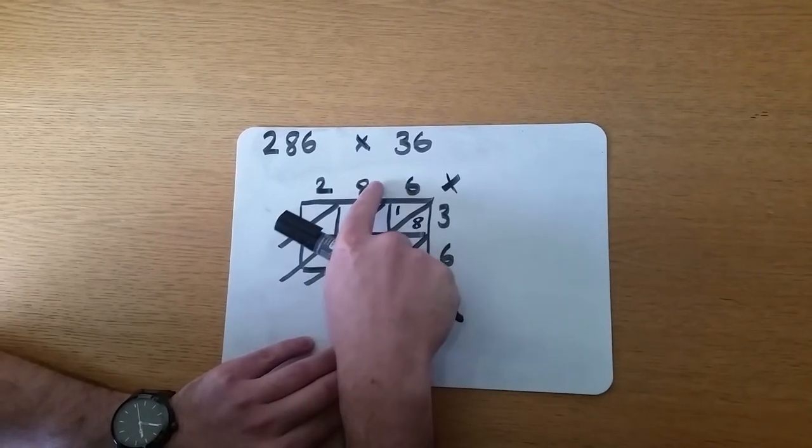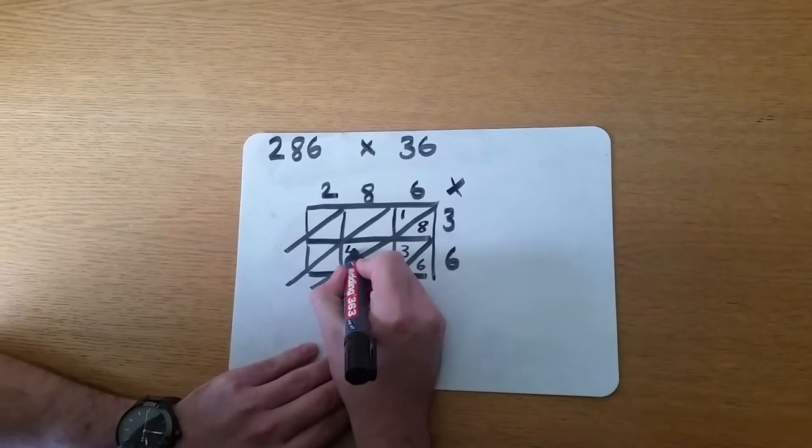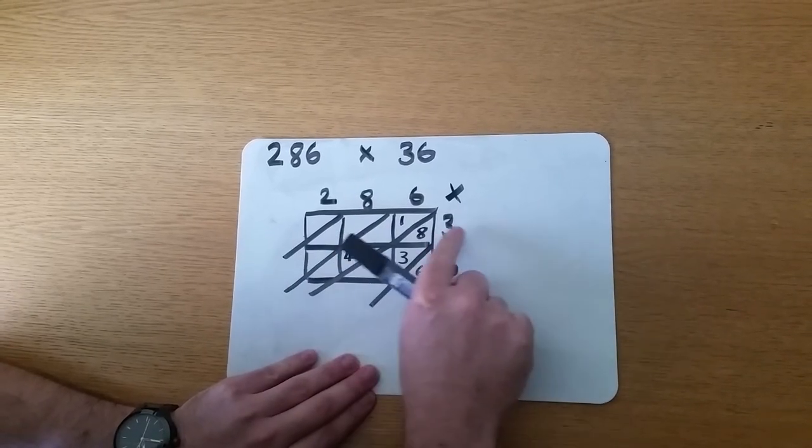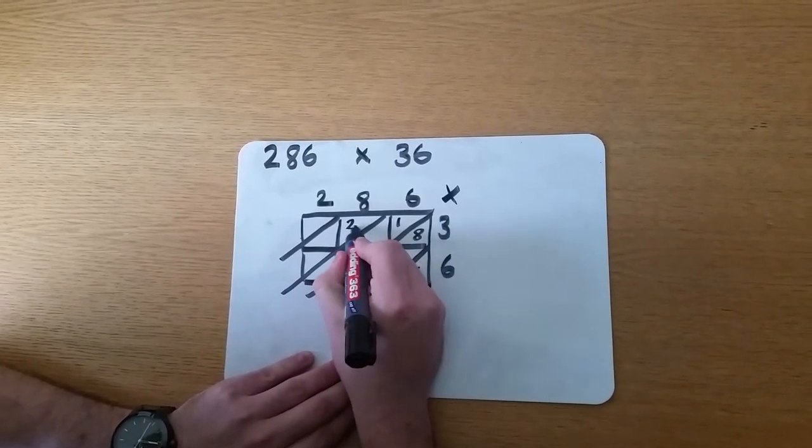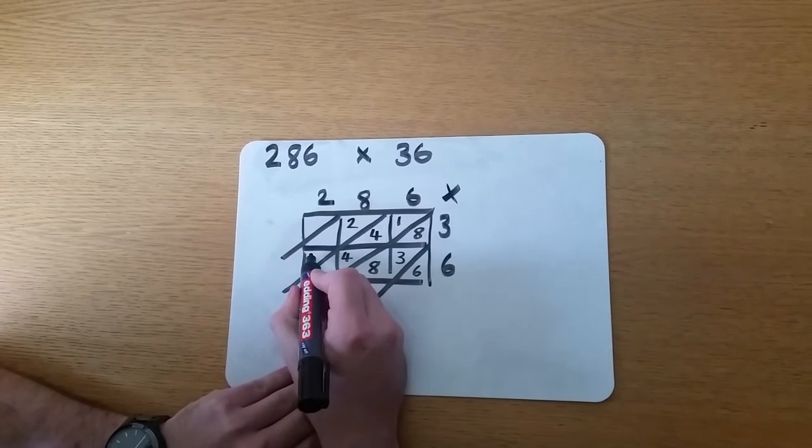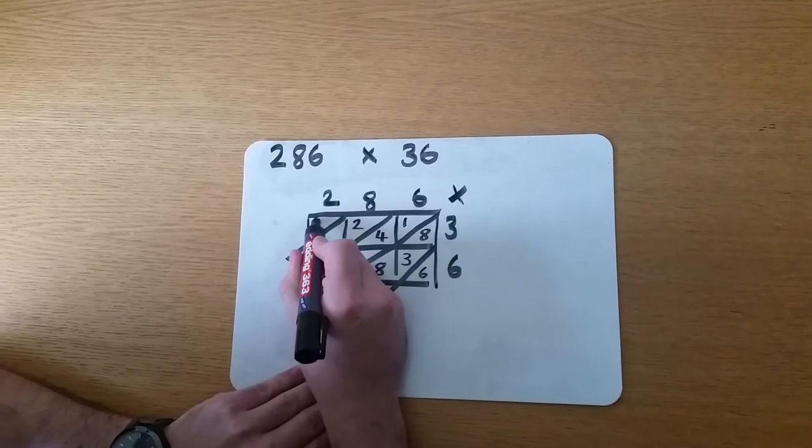We're going to move on to 8 times 6, whose answer will go in this box. That is 48. Next is 8 times 3, which is 24. And we'll finish the rest of this box by doing 2 times 6, which is 12, and 2 times 3, which is 6.